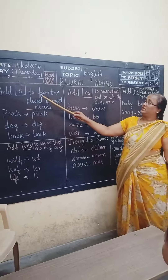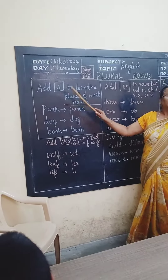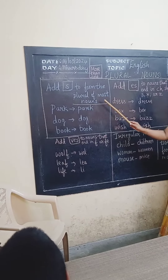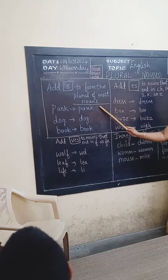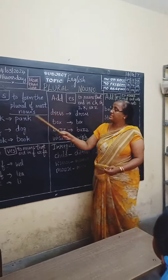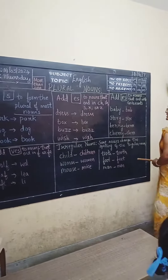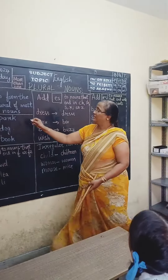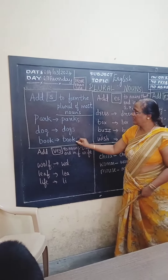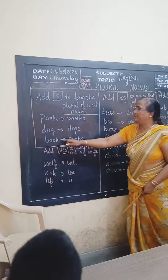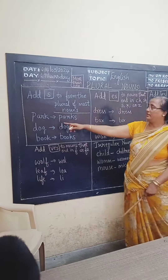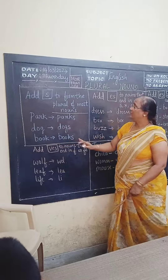The first rule is we are adding S. The plural of most nouns is formed by adding S. For example, 'part' becomes 'parts'. S is added. All these are nouns.